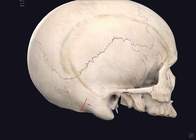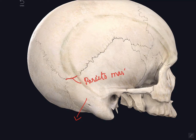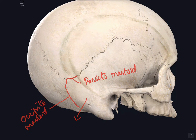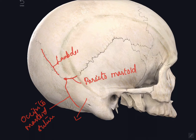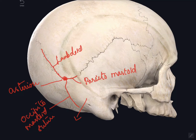The next feature is the mastoid part of the temporal bone. It articulates with the posterior inferior part of the parietal bone at the parietomastoid suture, and posteriorly with the squamous part of the occipital bone at the occipitomastoid suture. These sutures unite at the lateral end of the lambdoid suture, and this point is called the asterion, which corresponds with the posterolateral or mastoid fontanel in the fetal skull.